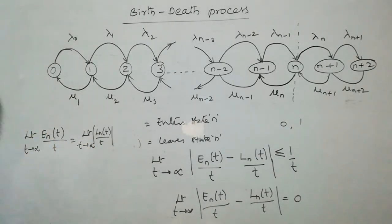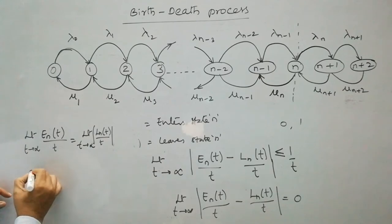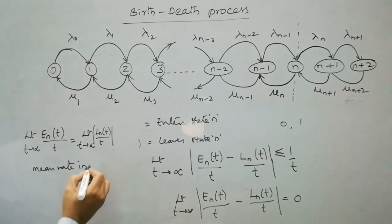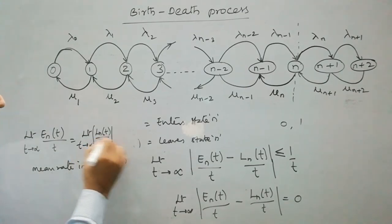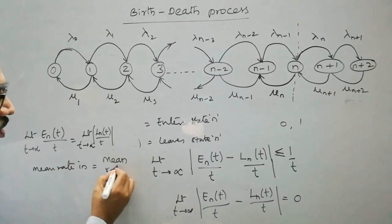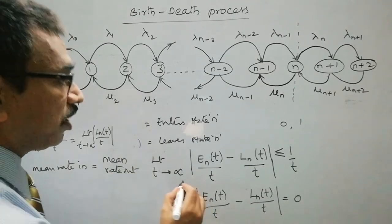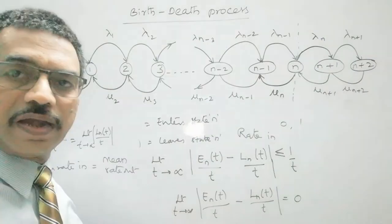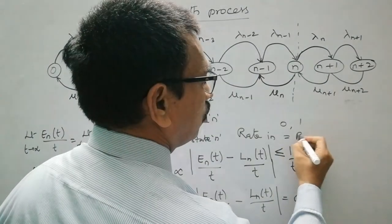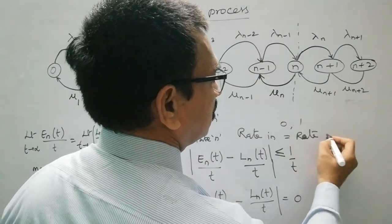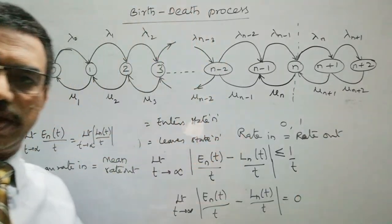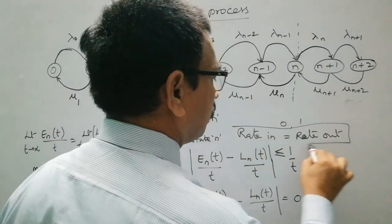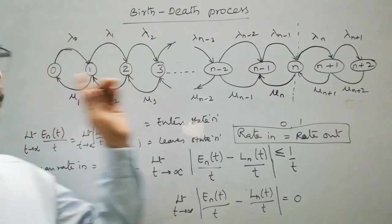This is the mean rate at which the system enters state n — mean rate in — and this equals the mean rate at which the system leaves state n — mean rate out. So we conclude that the rate at which the system enters a particular state equals the rate at which the system leaves that state. This is called the balance equation for this continuous-time Markov chain.